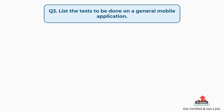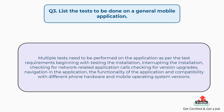Question number 3: List the tests to be done on a general mobile application. Multiple tests need to be performed on the application as per the test requirements, beginning with testing the installation, interrupting the installation, checking for network-related application calls, checking for version upgrades, navigation in the application, the functionality of the application, and compatibility with different phone hardware and mobile operating system versions.